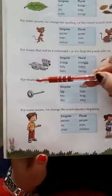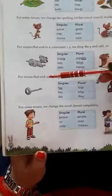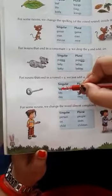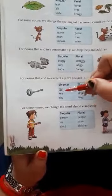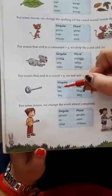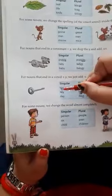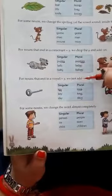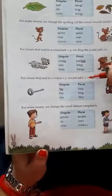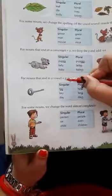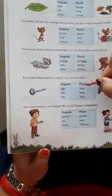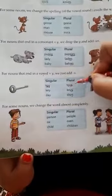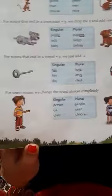For nouns that end in a vowel plus Y, we just add S — we don't need to drop the Y. Vowels are A, E, I, O, U. Here is O plus Y. For example, T-O-Y, add S — toys.